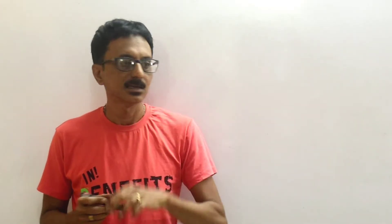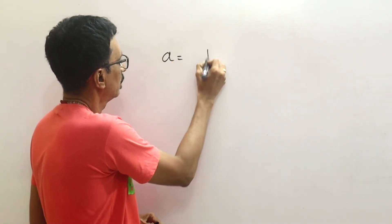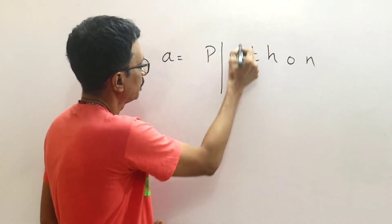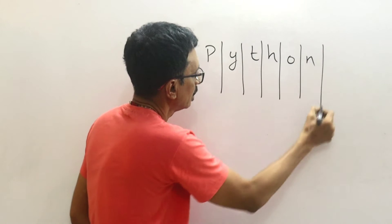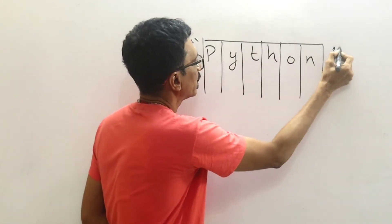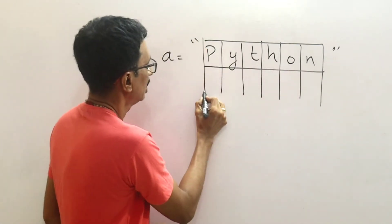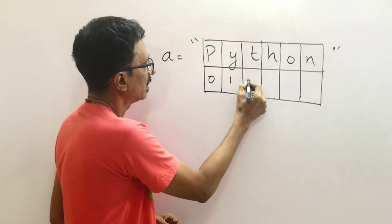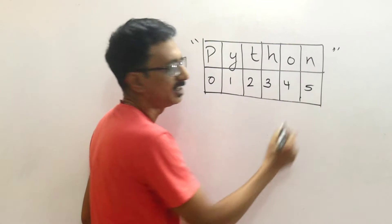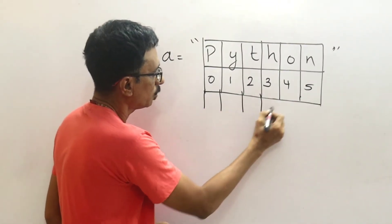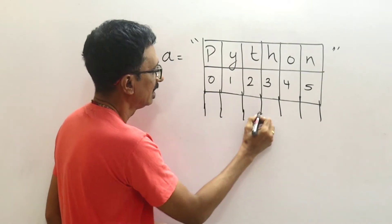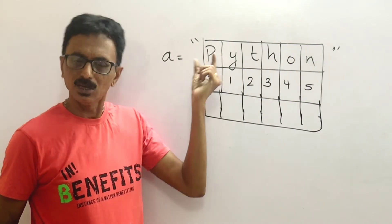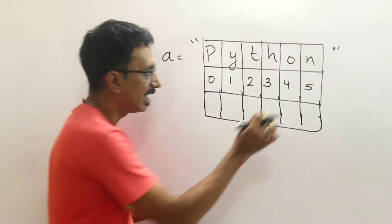This is a string. The position — if you take a string like 'Python', there are positions. In Python, the index starts at position 0. That is the starting point. Python uses 0-based indexing.